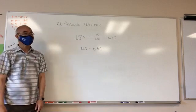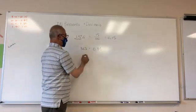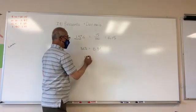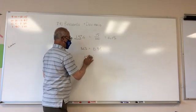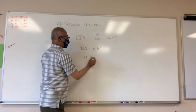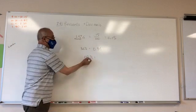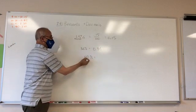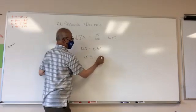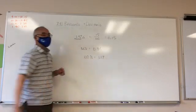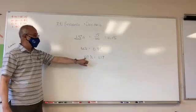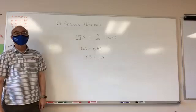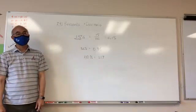So if I have 117 percent, I would start from here, move this over one and two, so my decimal will be 1.17. So 117 percent is the same as 1.17.